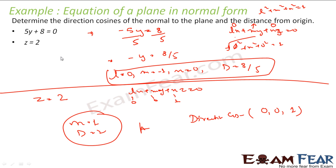Similarly, in this case the direction cosines are 0, minus 1, and 0. It is not a difficult equation at all. The only thing is you have to convert any equation into the form Lx plus My plus Nz equals d, where L² plus M² plus N² equals 1.